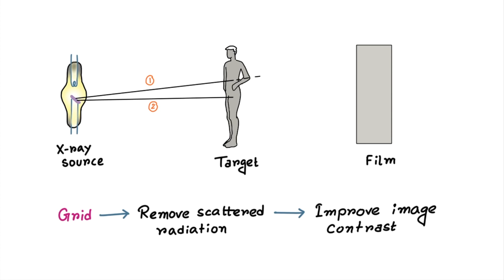For an example, let's take these two rays. Here you can see after penetrating the target object there is no change in direction for the first ray. However, in case of second ray the direction or path has changed.